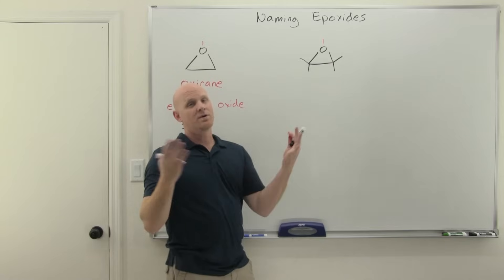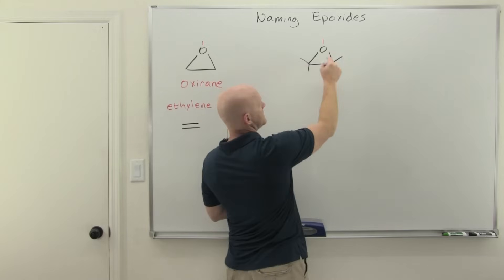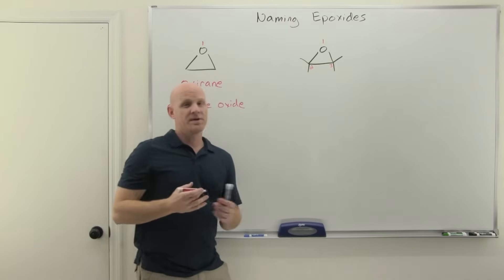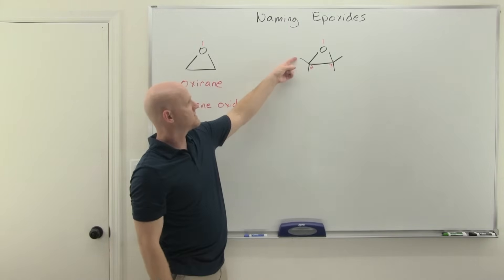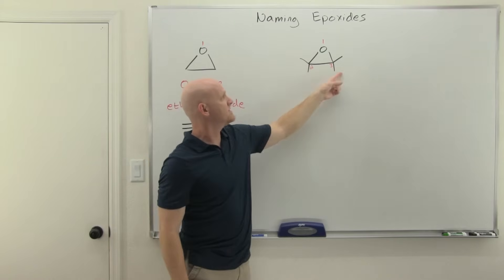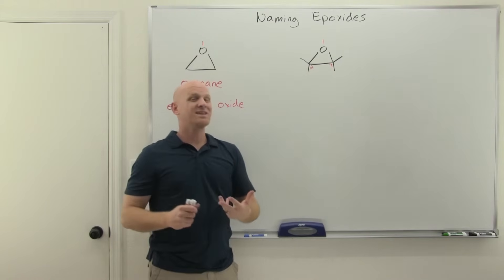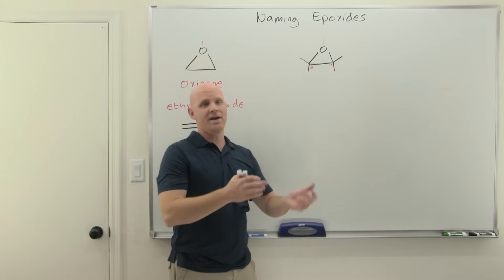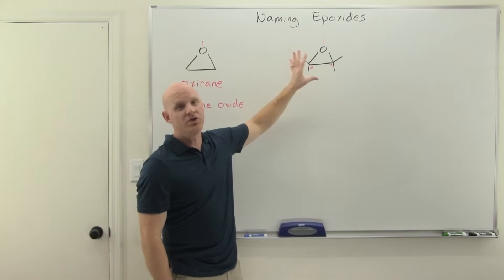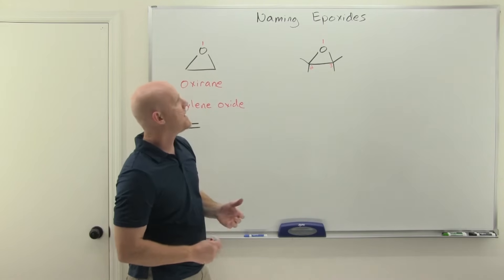One, it doesn't really matter where we call two and three. I can go two and three or two and three, and it's the same thing either way. But the other reason is I want to make a point of putting identical methyl groups on this carbon and on this carbon. That way we didn't end up with any chiral centers, because I didn't want to have to name R and S and all that stuff to cloud the waters. I really just wanted to go over what's new with naming epoxides.